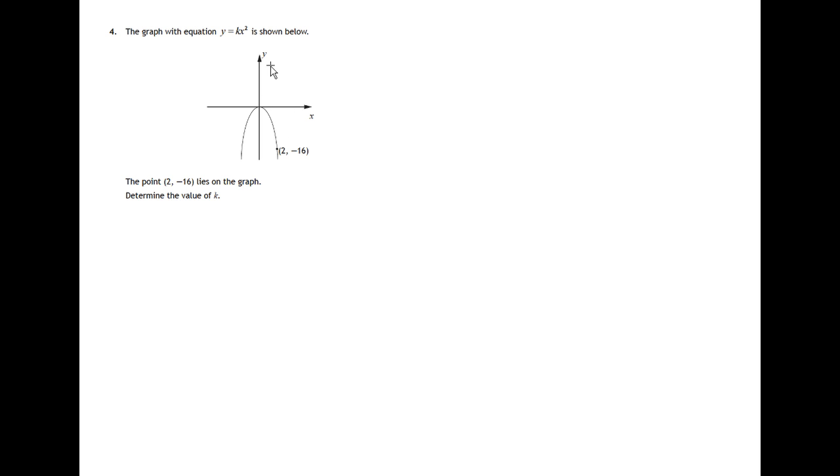We're given this parabola with the equation y equals kx squared. So we've given a graph, we know its equation, and we're also told the coordinates of a point that lies on the graph.